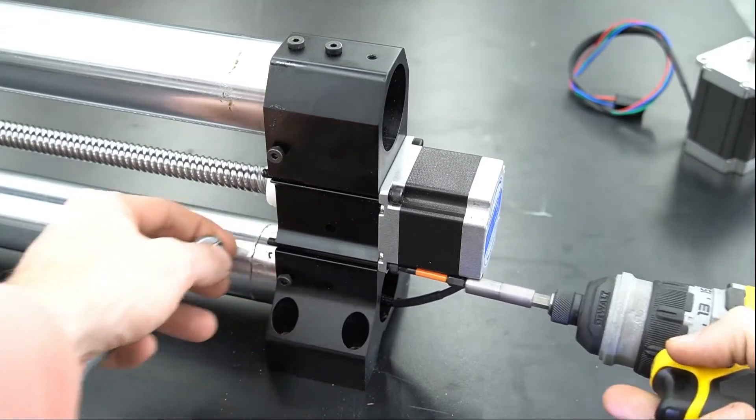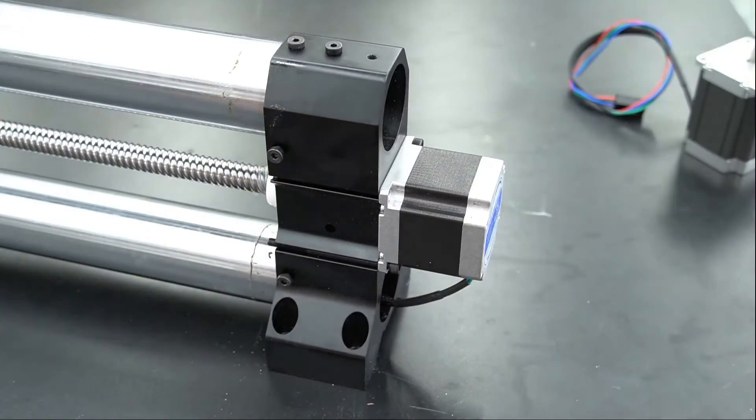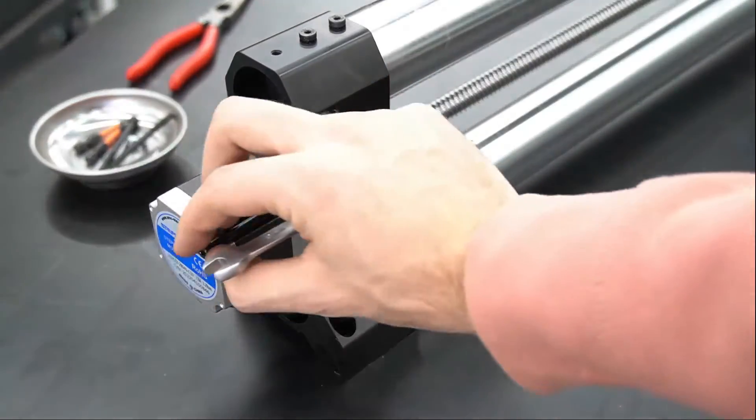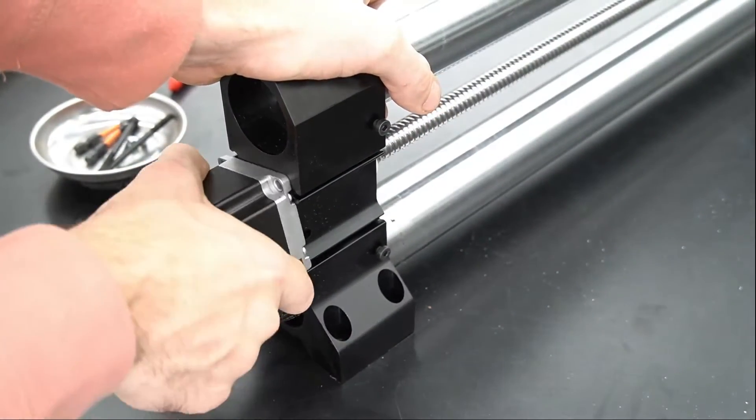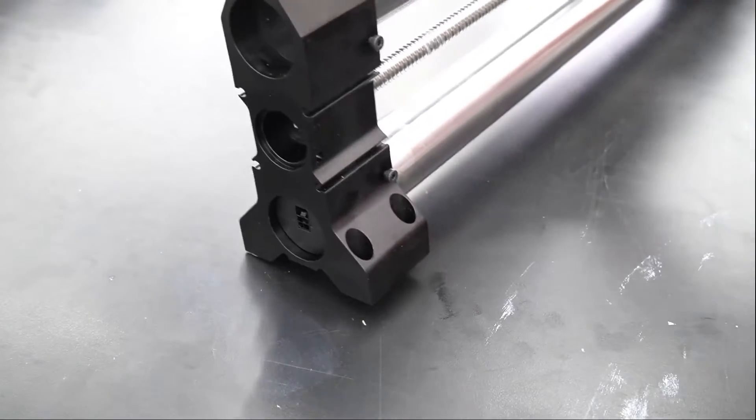We'll use a four millimeter hex key with an eight millimeter crescent wrench to remove these, then set them aside as we will be reusing them. Once all four bolts are loosened and removed, we can pull the motor from the end of the rail, bringing half of the coupler with it.